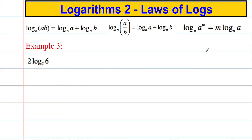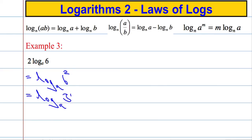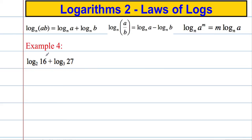Third example: 2 log to the base A of 6. There's a number in front of the log, so I can bring it up and make it a power. That's the same as log to the base A of 6 squared. For example 4, a bit more tricky — we want to rewrite as a single logarithm. We note that 2 and 16 are related: 16 is 2 to the power 4. So log to the base 2 of 16 becomes log to the base 2 of 2 to the power 4.